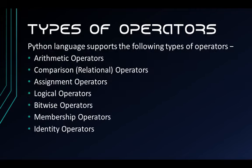There are 7 types of operators in Python language, namely arithmetic operators, comparison or relational operators, assignment operators, logical operators, bitwise operators, membership operators, and identity operators. Now let's have a look at all the operators one by one.